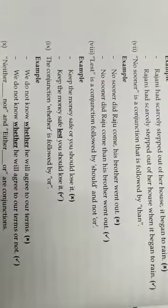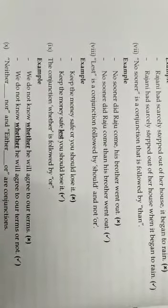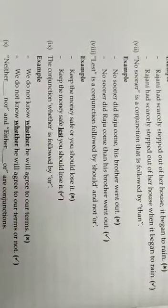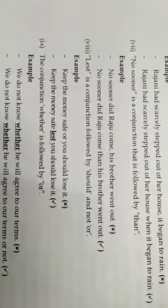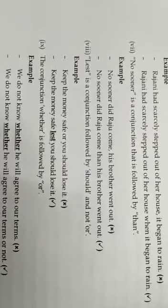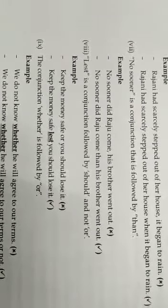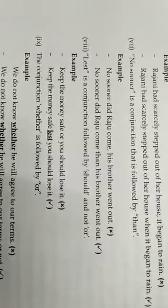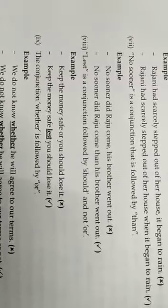No sooner is a conjunction that is followed by than. No sooner than like you have to use. No sooner did Raju come his brother went out. Not like that, but the corrected one is no sooner did Raju come than his brother went out.